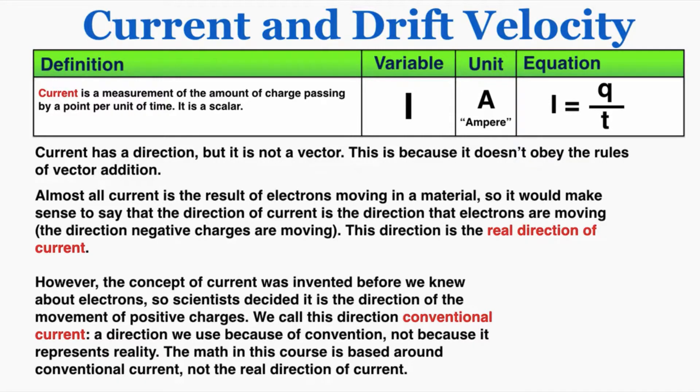Almost all current is the result of electrons moving in a material. So it would make sense to say that the direction of current is the direction that electrons are moving inside the material, which is the direction negative charges are moving. This direction is the real direction of current. So like if you have a wire going in a circle and you have current in the wire, the actual movement of the electrons is the movement of negative charge. It has a certain direction associated with it, so we could say that that's the direction of the current, that's the real direction of the current.